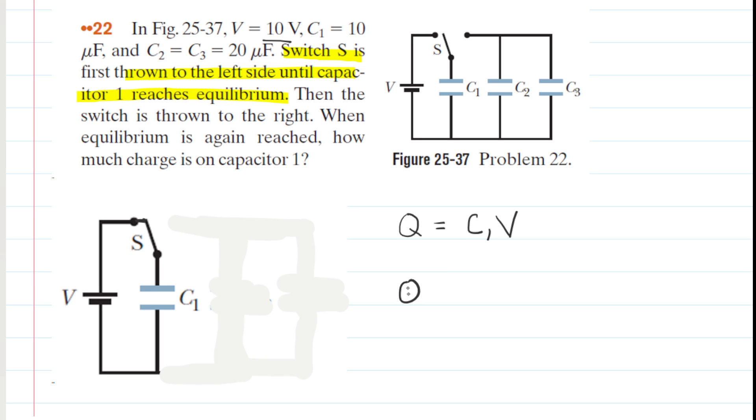We can go ahead and plug in the known values. C1 is 10 microfarads, and we'll multiply that by 10 volts. And when we do that, we can see that the total amount of charge stored on C1 is 100 microcoulombs, since we plugged in microfarads.